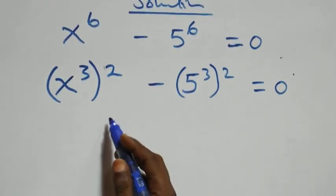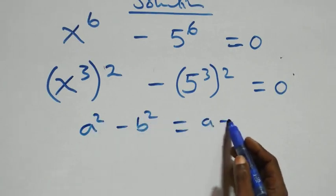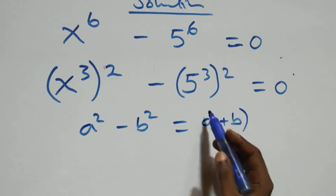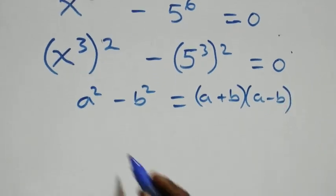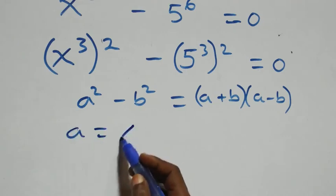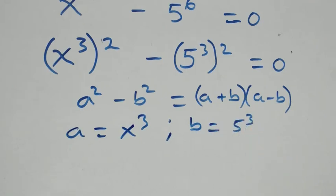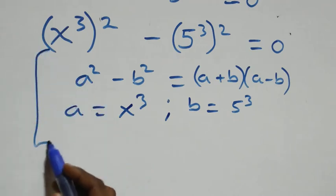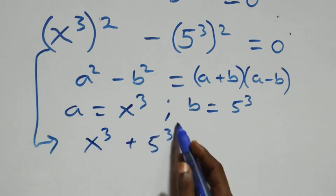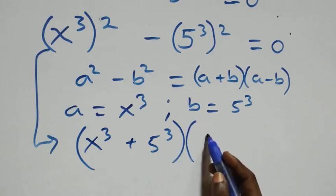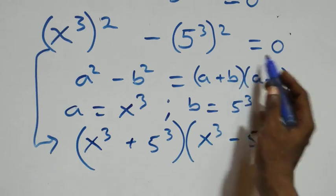The next step: this follows the form a squared minus b squared, which can be written as (a + b)(a - b). Here a stands as x raised to power 3 and b stands as 5 raised to power 3. So this becomes (x³ + 5³)(x³ - 5³) equals to 0.